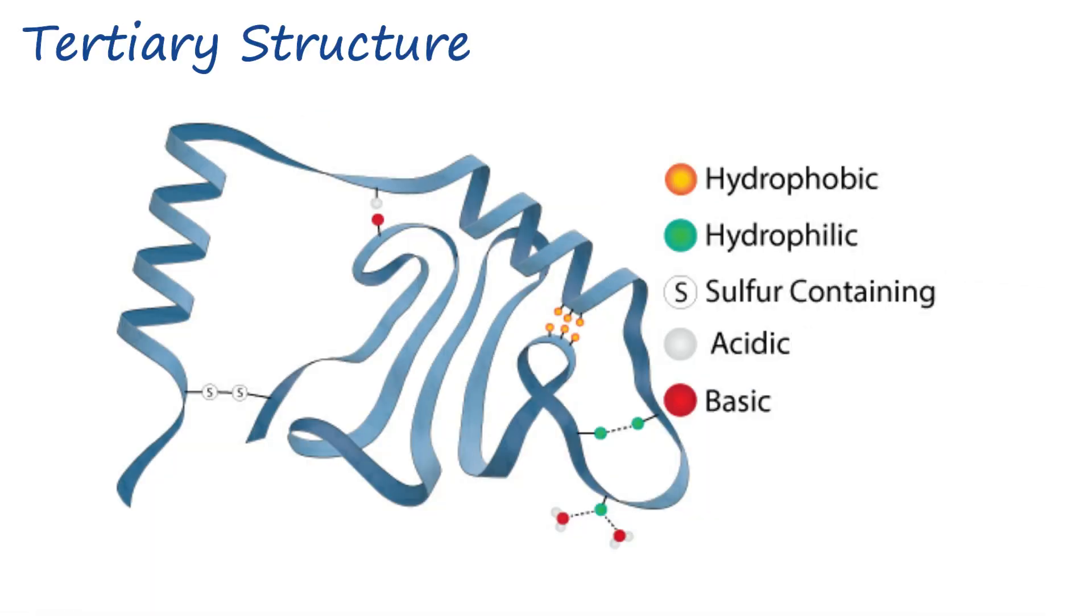Now that the chain is all coiled up and the R groups are closer together instead of in that linear position, bonds are going to start forming between the R groups. R groups are going to bind to other R groups that are complementary to their chemical properties. For example, a polar R group is not going to go bind to another polar R group.